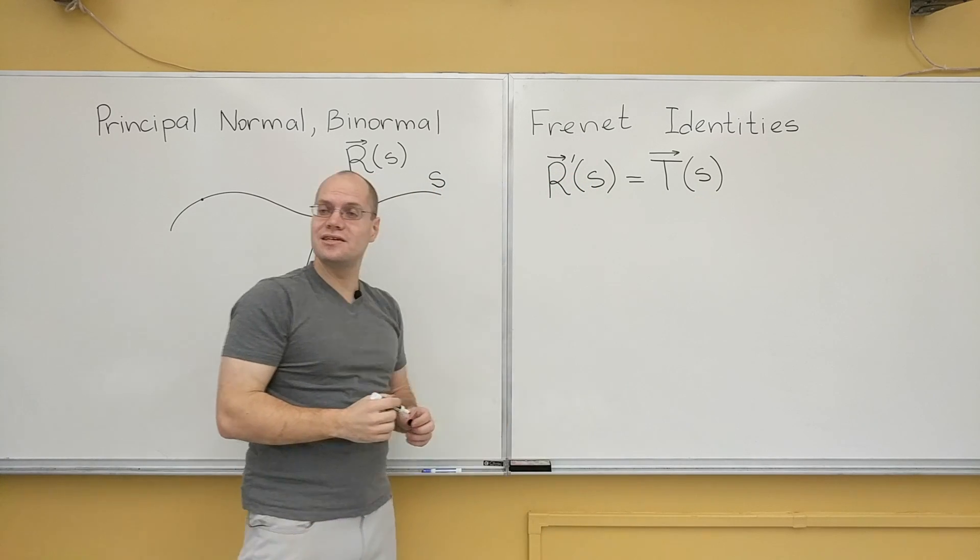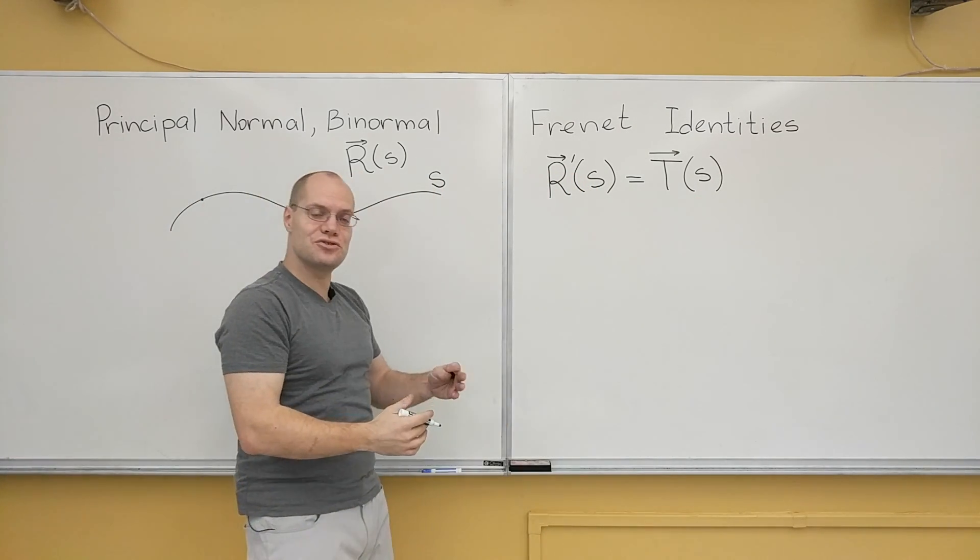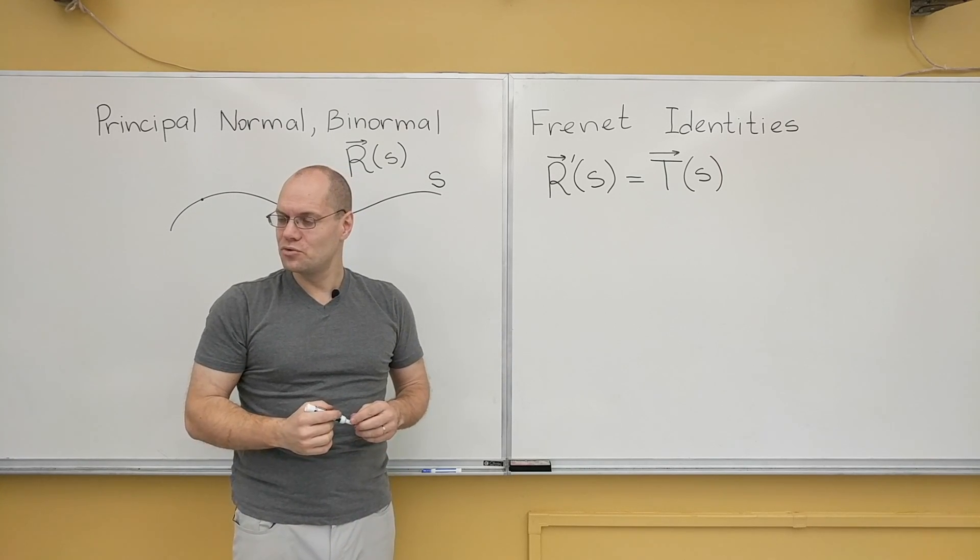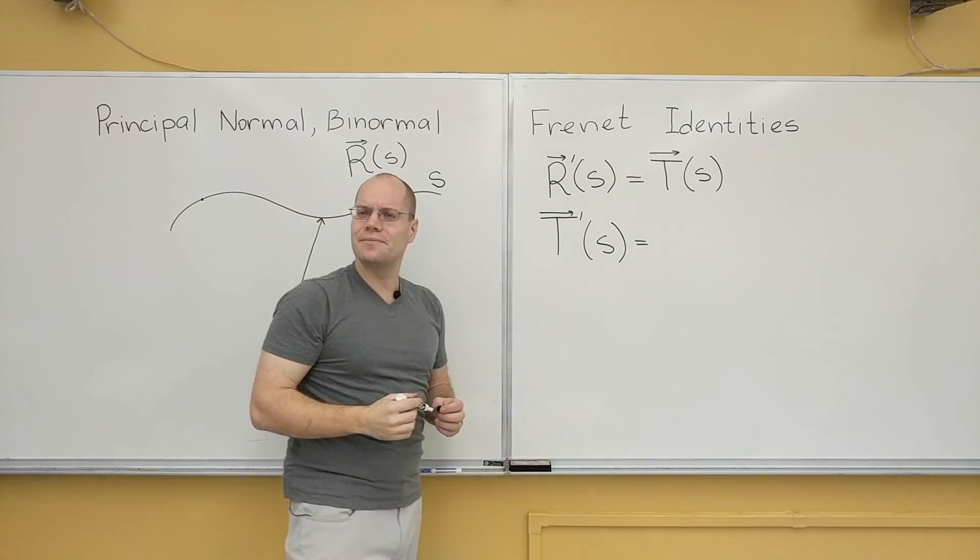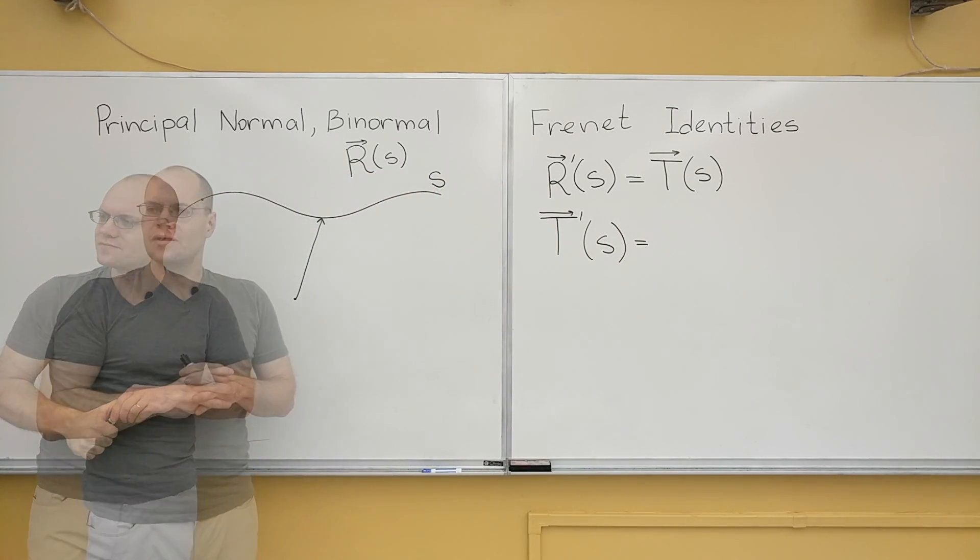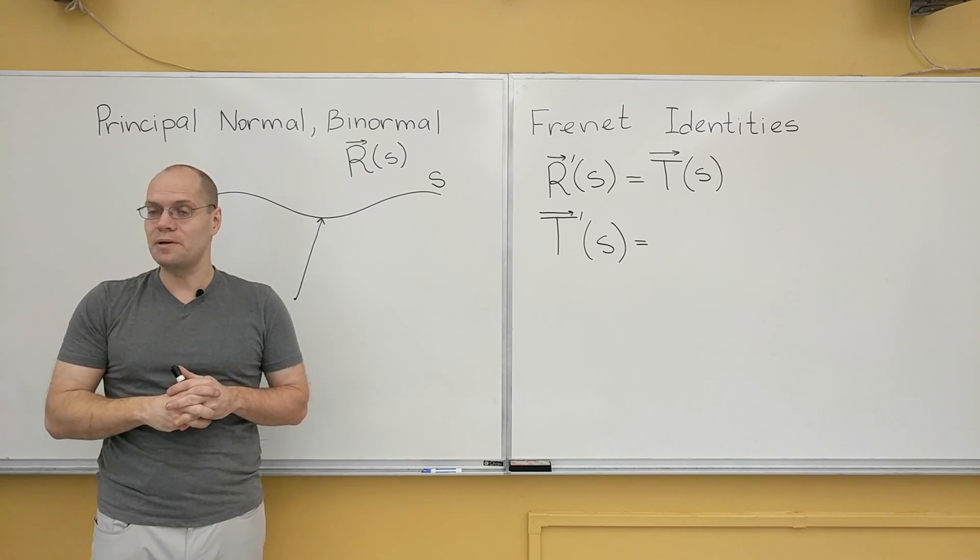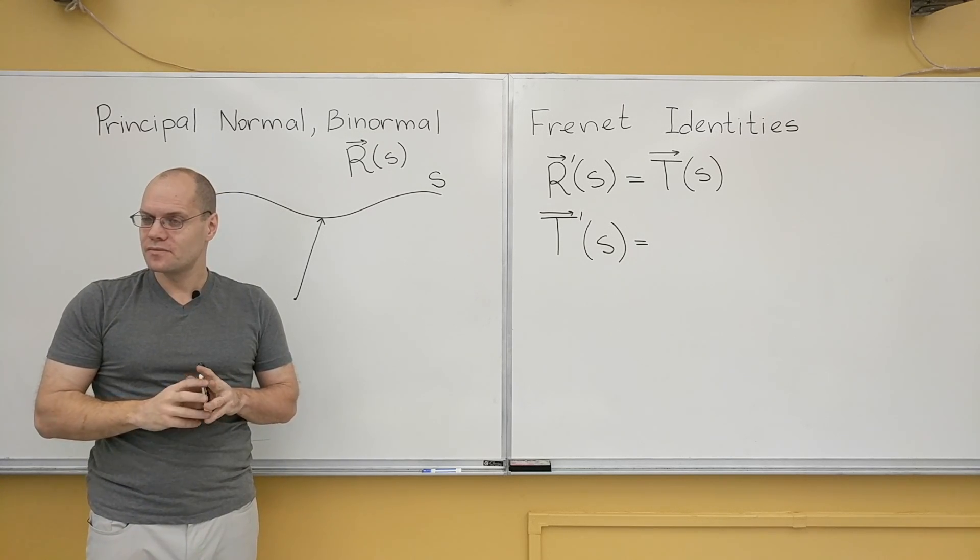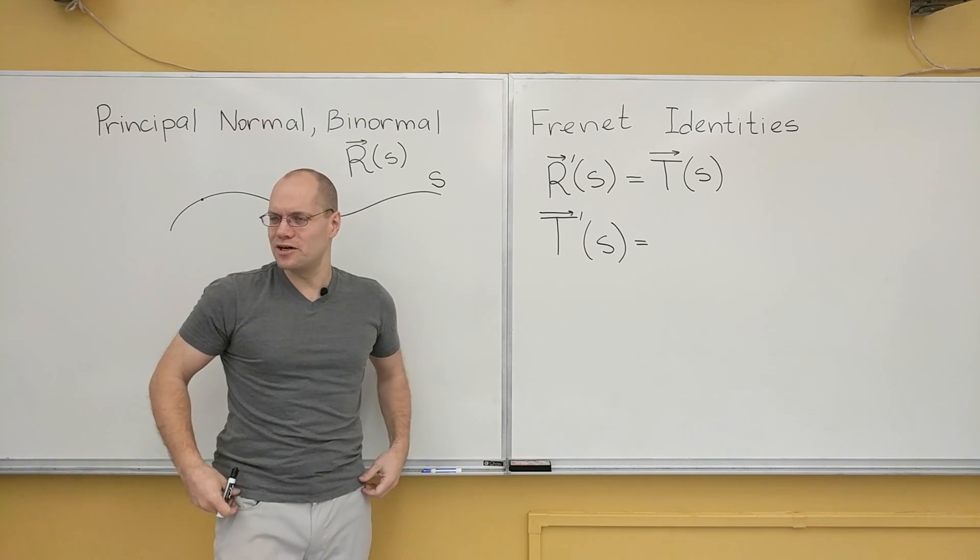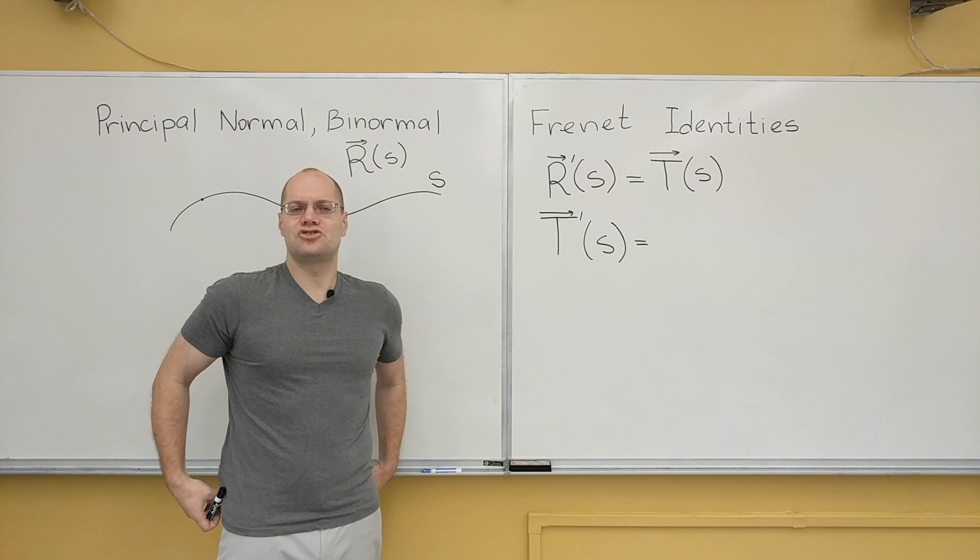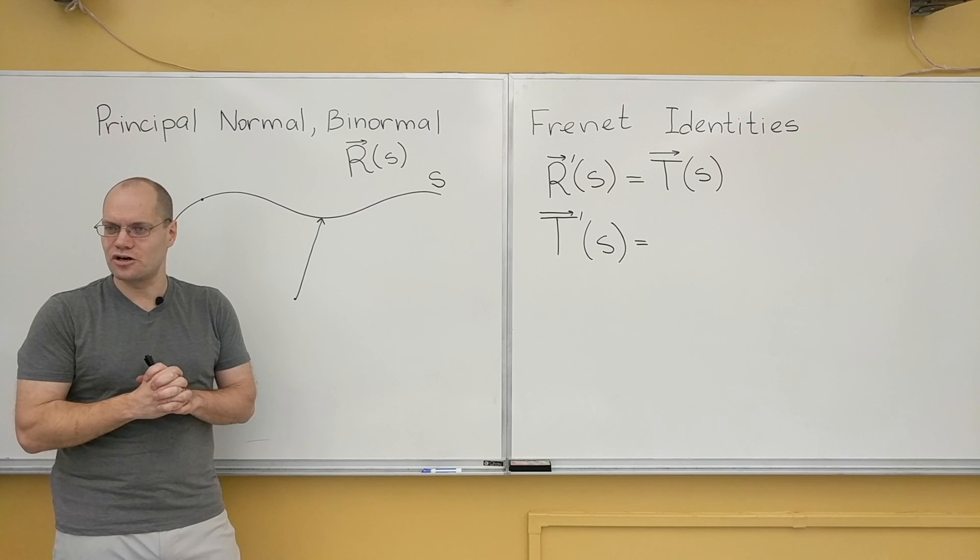So T of s interestingly is a unit vector. And so we'll continue to do the one thing we can do, which is take the derivative of T of s. Tell me something about the derivative of T of s. It will be perpendicular to T of s. It will be perpendicular to the tangent. Or as Mike put it, perpendicular to the curve, which is a much better way of saying it, which is shorthand for saying perpendicular to the tangent of the curve. You just say perpendicular to the curve.